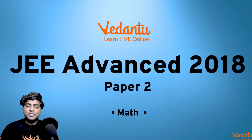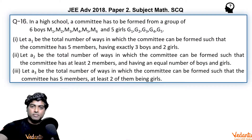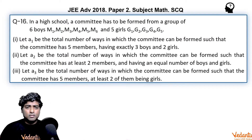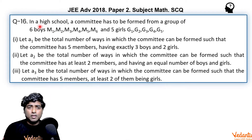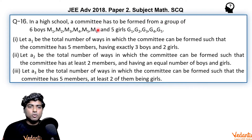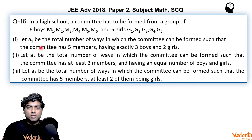Hello everyone, my name is Shashank Shekhar, master teacher of mathematics at Vedantu. We are presenting solutions for JEE Advanced 2018 Paper 2. This question is related to the topic permutation and combination. In a high school, a committee has to be formed from a group of six boys — m1, m2, m3, m4, m5, m6 — and five girls — g1, g2, g3, g4, g5.